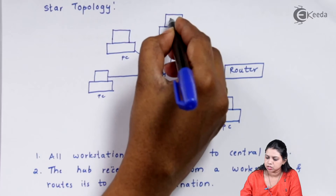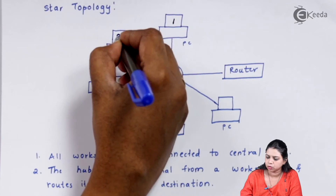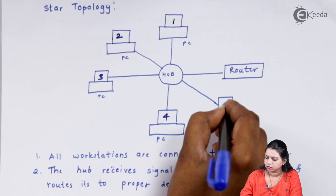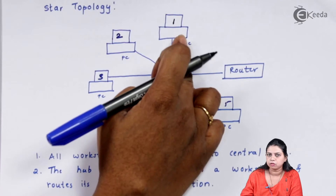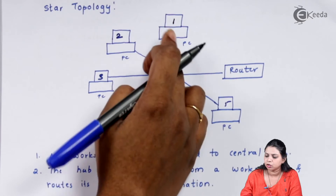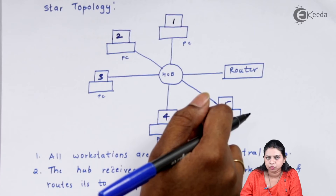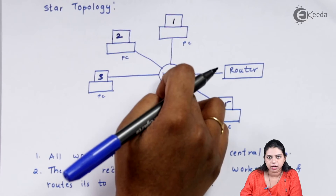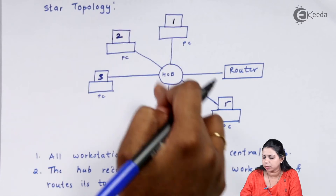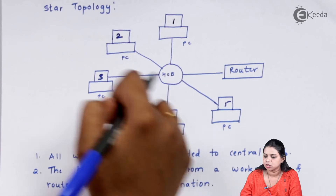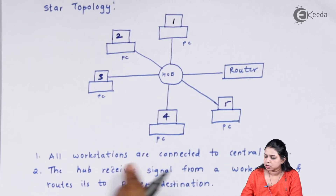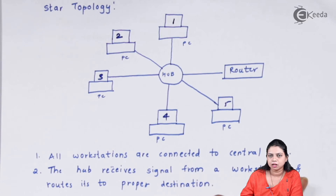Suppose my nodes are node number one, two, three, four, and five. If node number one wants to communicate with node number four, it cannot communicate directly. First, it has to send the data to the hub, and then the hub will route the data to the appropriate destination.